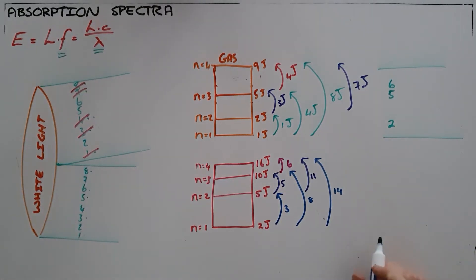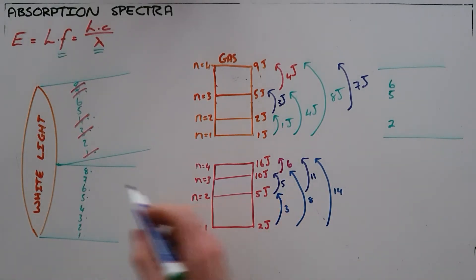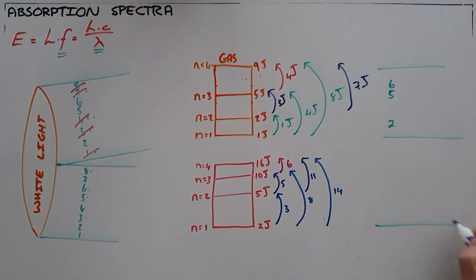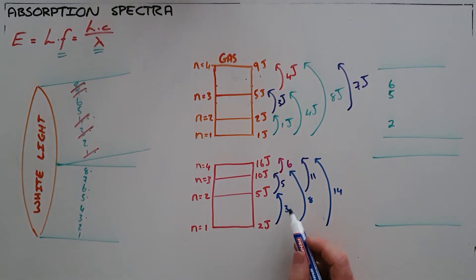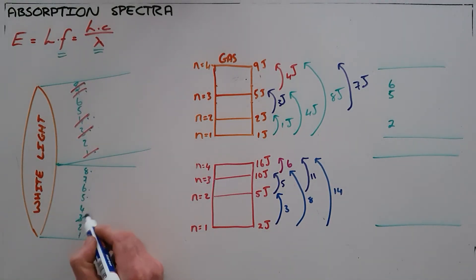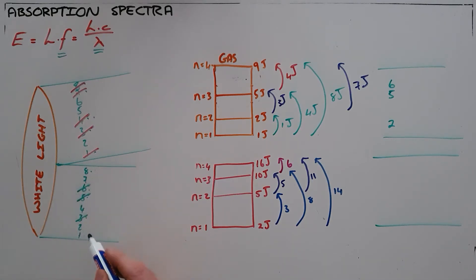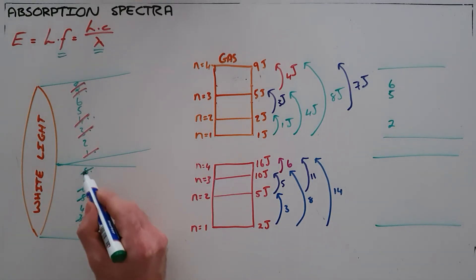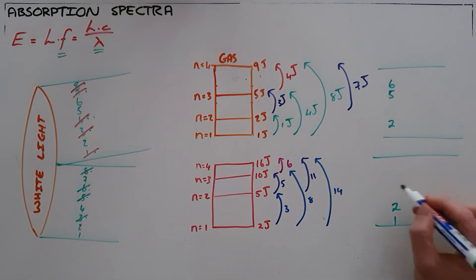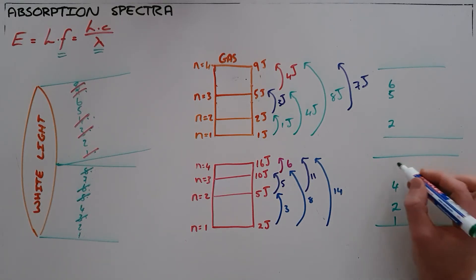If that same white light — the continuous spectrum — is passed through a different gas, because the energy levels are unique, different photons of energy would be absorbed. In this case the 3, 5, 6, and 8 joule photons are absorbed, so the spectrum coming out the other side has different energies missing from it.